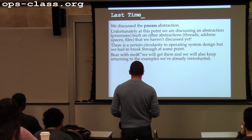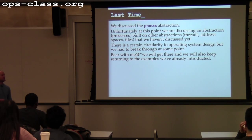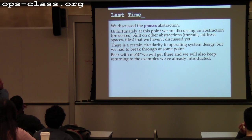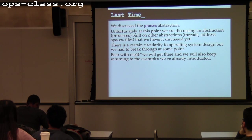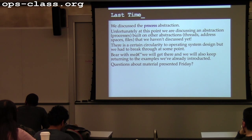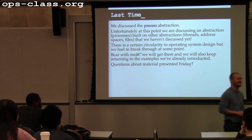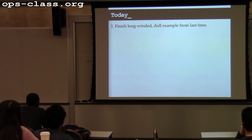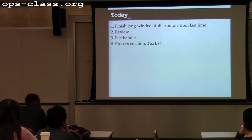Last time we started talking about processes. At some point this all starts to seem a little abrupt, but there's some circularity going on here. We started talking about processes as the basic operating system abstraction. Today we're going to continue that discussion and talk about how processes are born and die. But before I start — any questions about Friday? We'll do some review and then finish the example we were working on, along with some stuff about file handles and process creation.